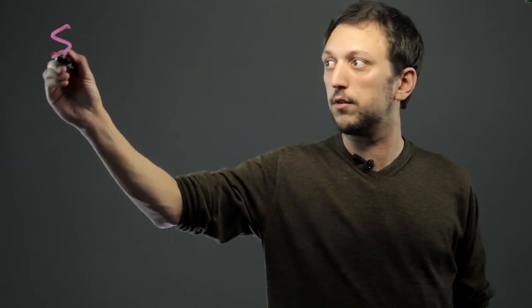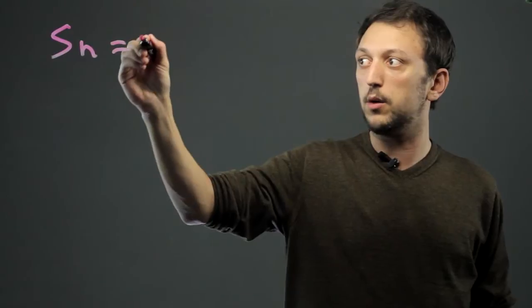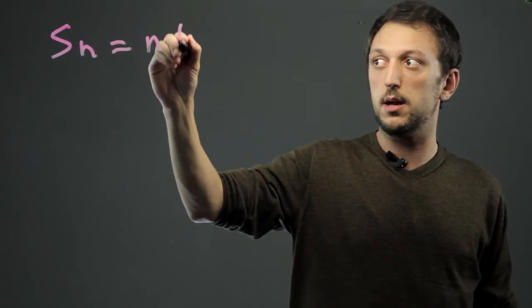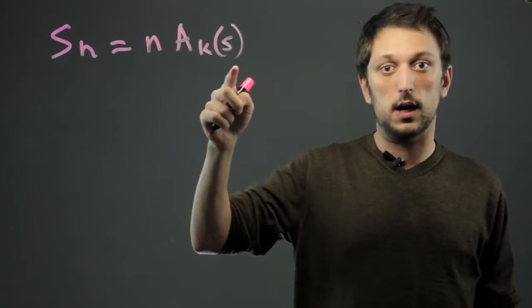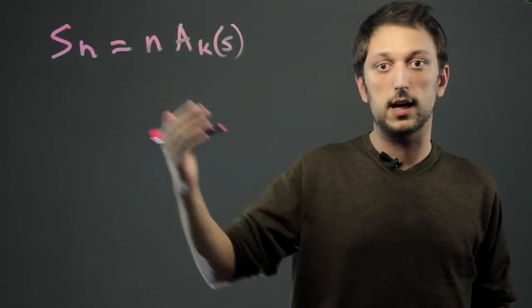So we're going to look at the formula for surface area, which would be SN equals N times AKS. Now this looks complicated, but you just have to know what each thing stands for.